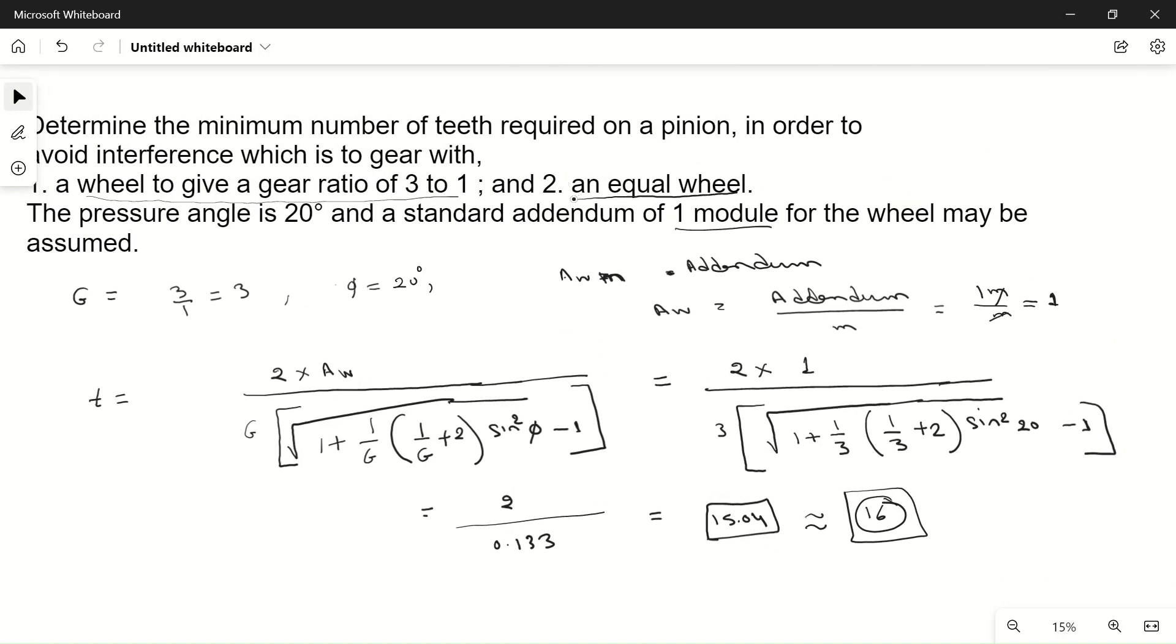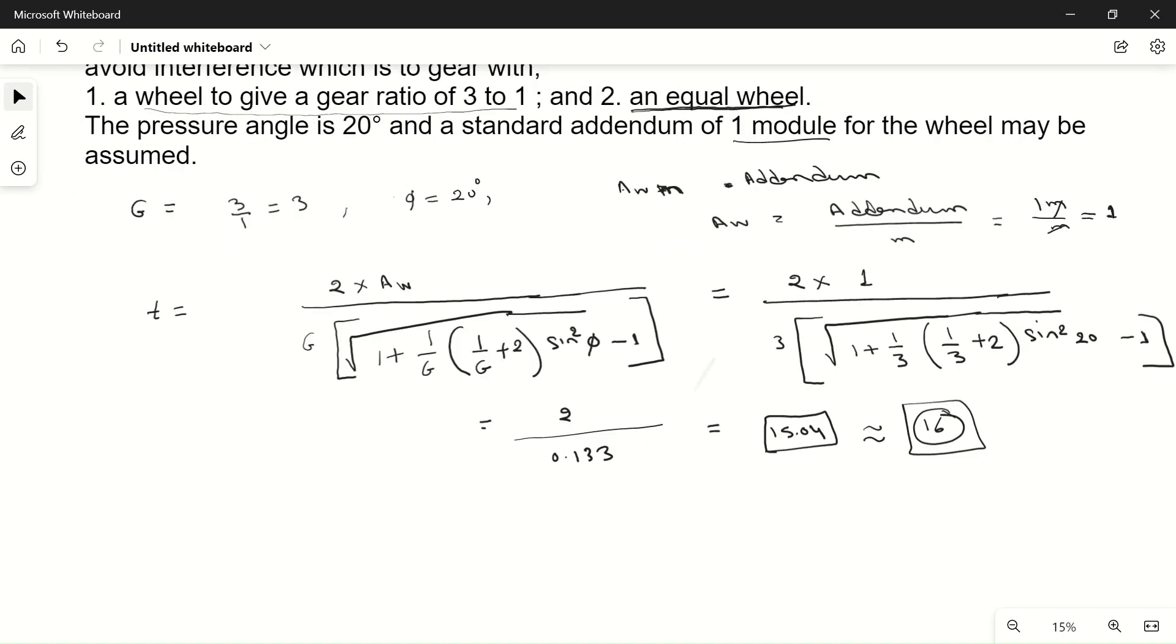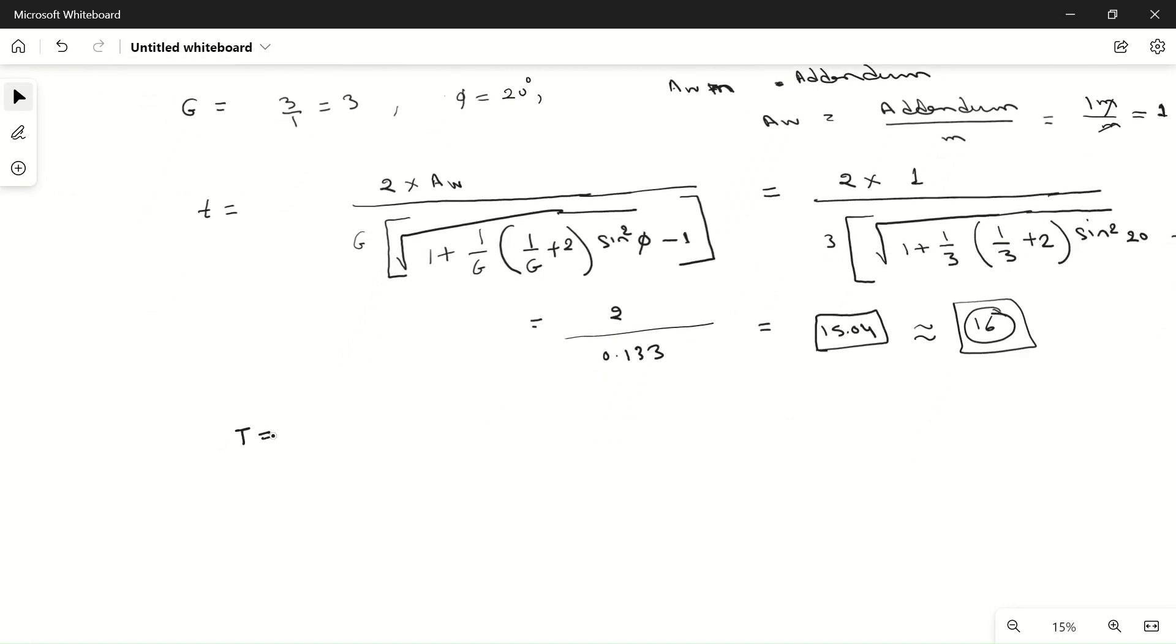Now we will consider the second case with equal wheels. Equal wheels means the number of teeth on gear and pinion will be the same, so gear ratio G equals T/T, which is one. We will put this value: minimum number of teeth equals 2 times a_w divided by G, times the square root of [1 plus 1/G times (1/G plus 2) times sine squared φ], minus one.